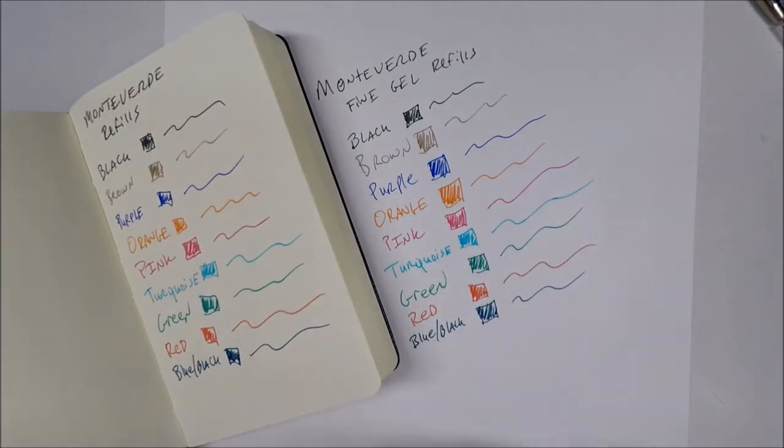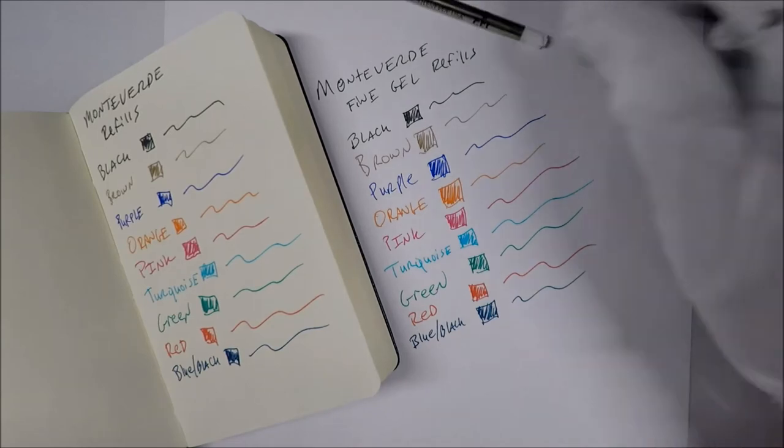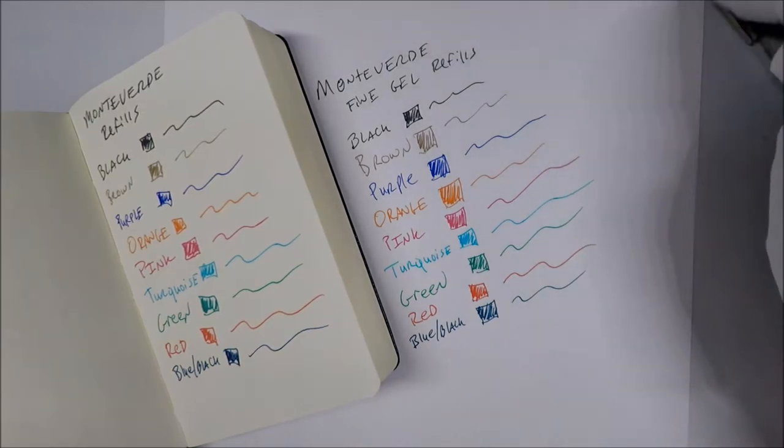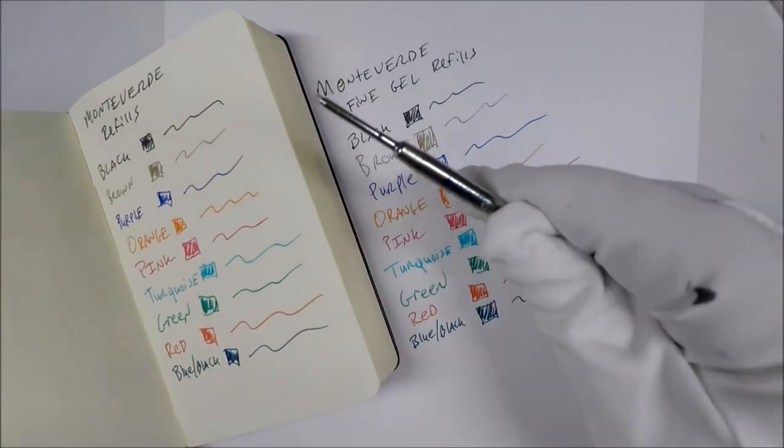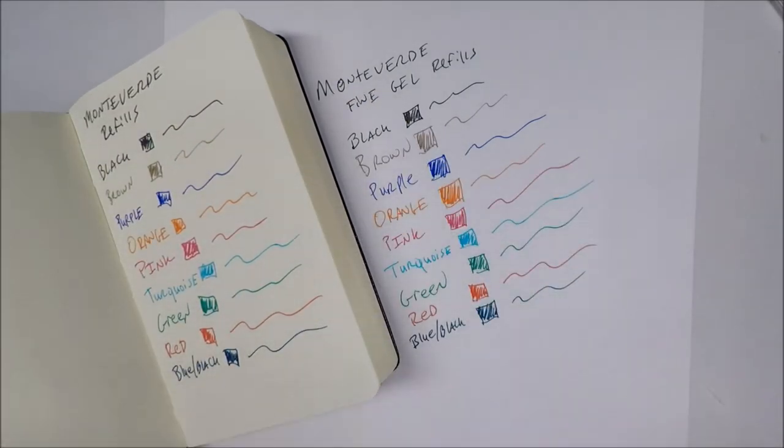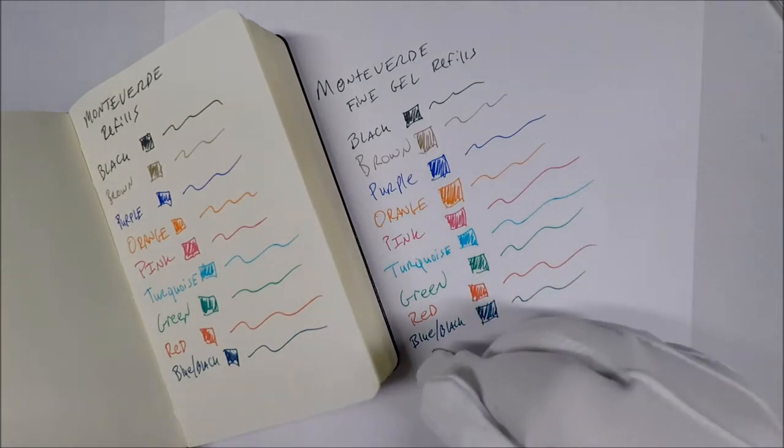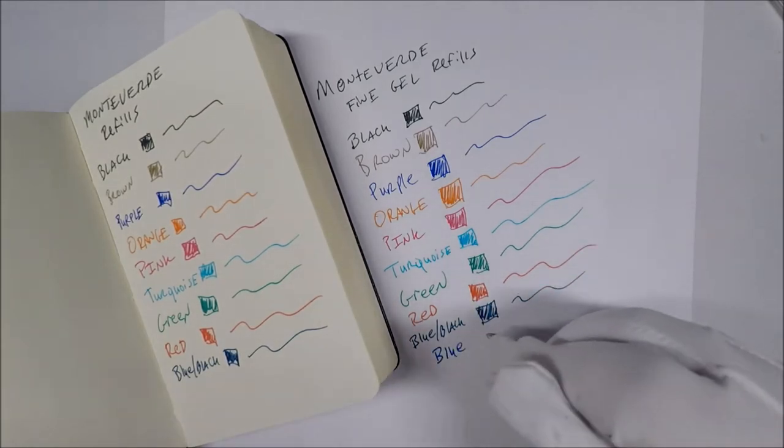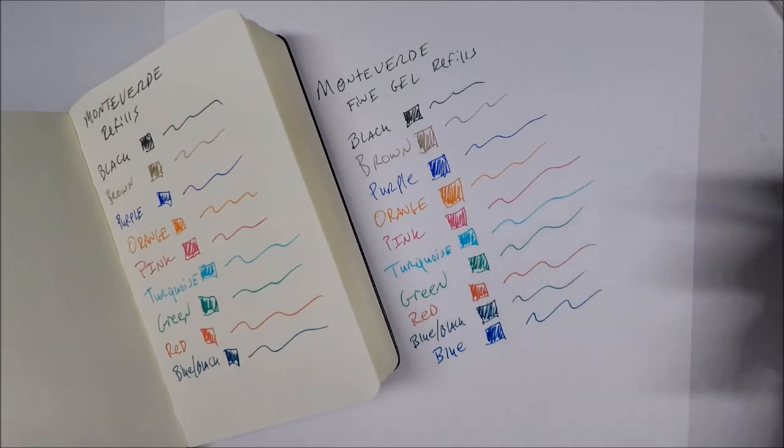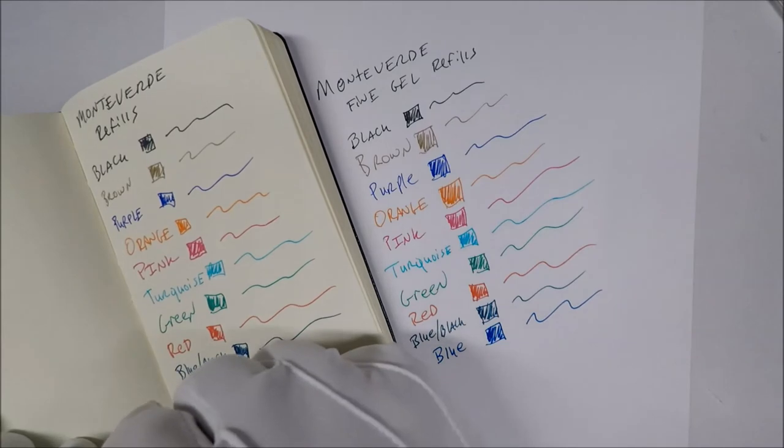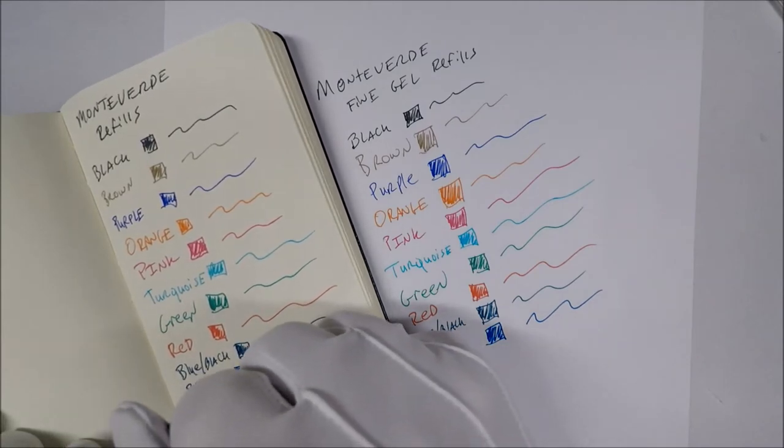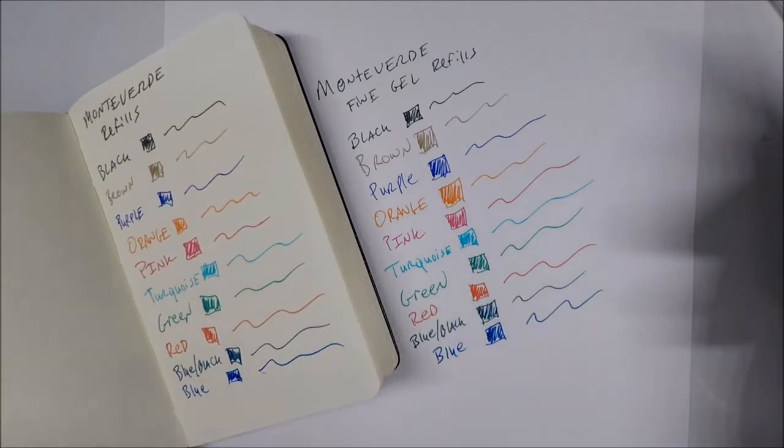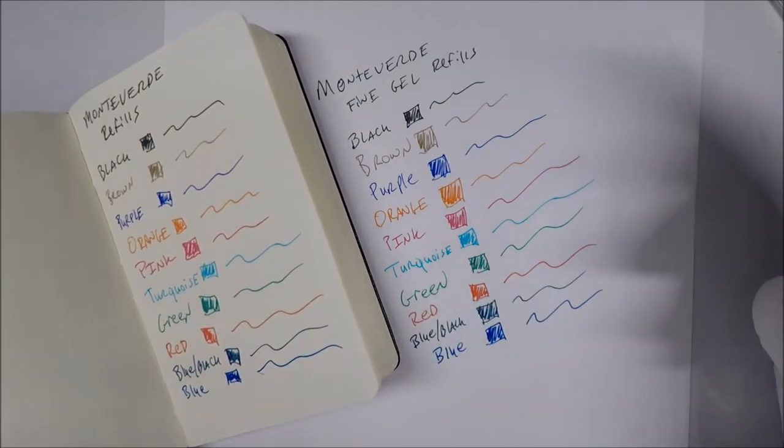Let's set this one aside. I want to, after we look at the last two colors, I want to try, I want to write this one right next to the actual black one so we can compare. The next one is blue. And blue again is, I like this color of blue. It's a good shade. And then over here, blue. Like so. And so that is all nine colors.